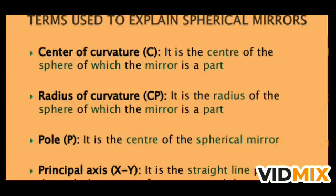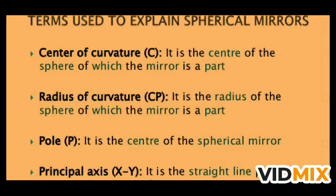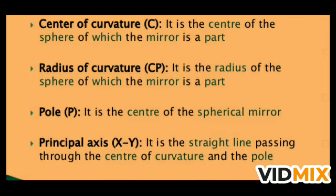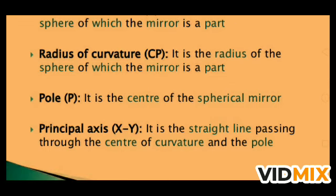The center of curvature is the center of the sphere of which the mirror is a part. The radius of curvature is the radius of that sphere. The pole, indicated by capital P, is the center of the spherical mirror. The principal axis is the straight line passing through the center of curvature and the pole.